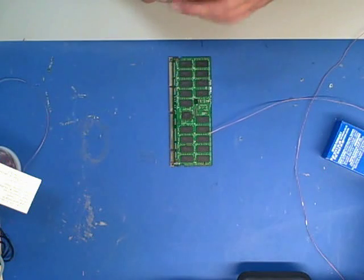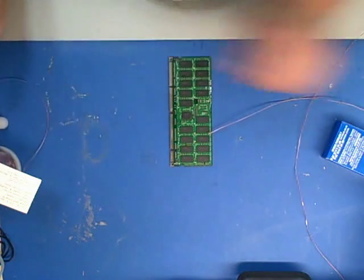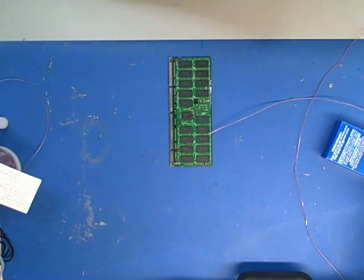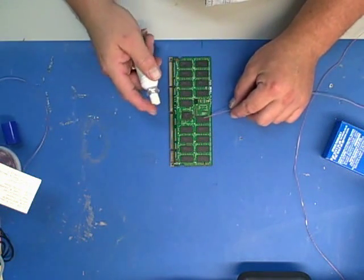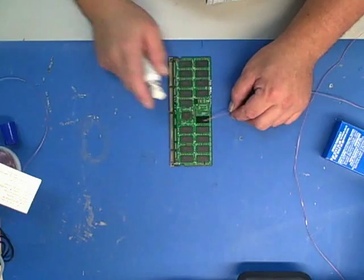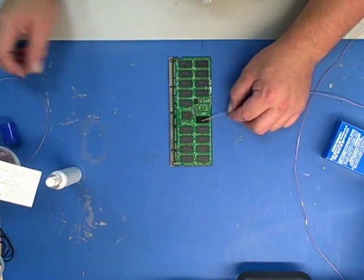So I start off with Loctite 7452. This is an accelerator cleaner. I'll go ahead and spray that on there, like so, get everything nice and clean and wet and ready to go.